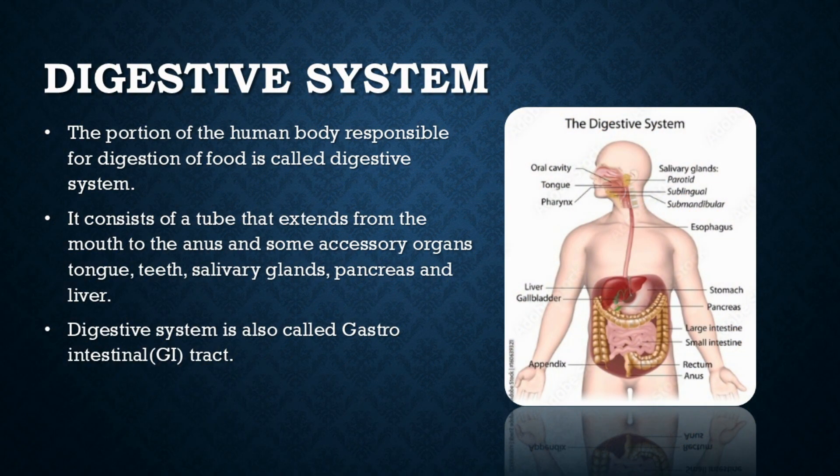The digestive system. The portion of the human body responsible for digestion of food is the digestive system. It consists of a tube that extends from the mouth to the anus, and some accessory organs include the tongue, teeth, salivary glands, pancreas, liver, and gallbladder. The digestive system is also called the gastrointestinal tract, or GI tract.